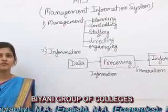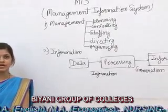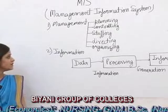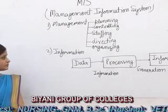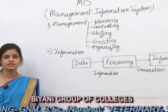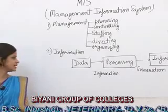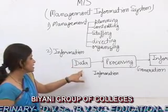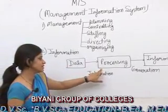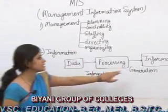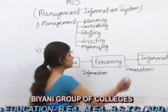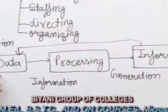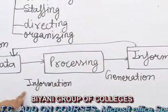Second is information. Information is a valuable component of an organization. Information is data that is processed and presented in a form. Information is a product of data processing and is interrelated to data — that is, data is processed into the form of information.